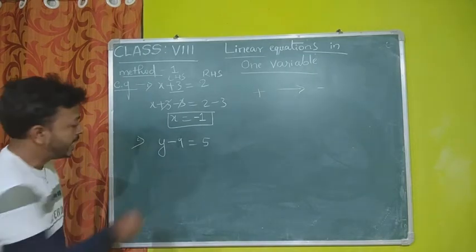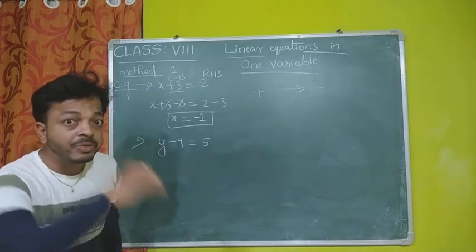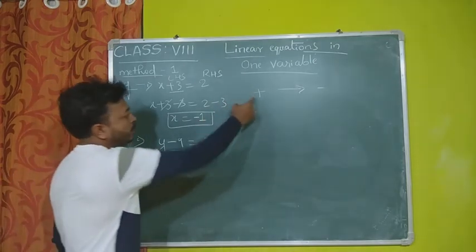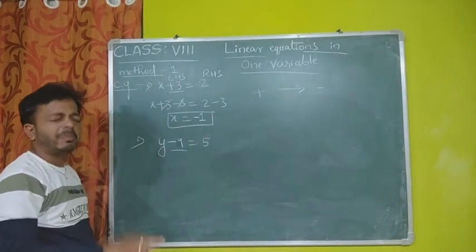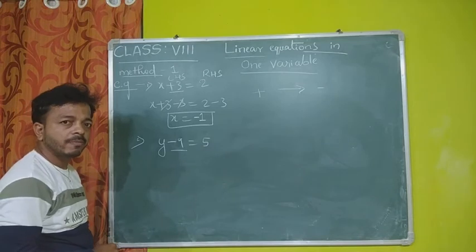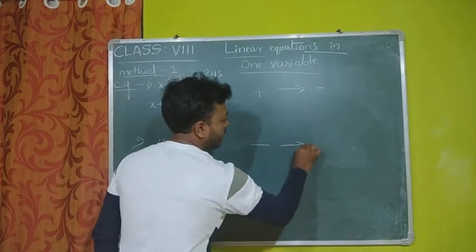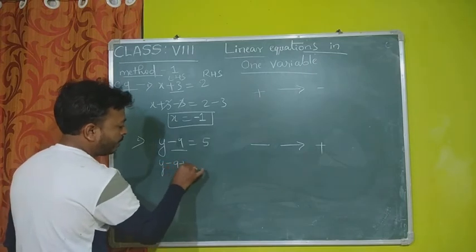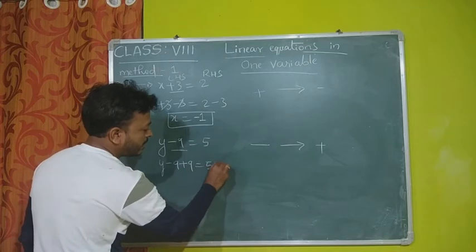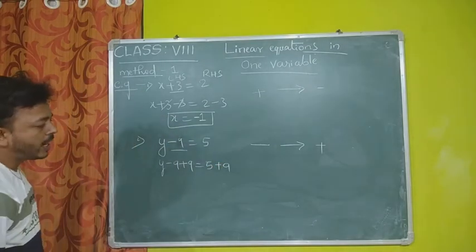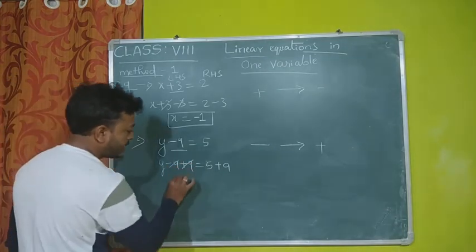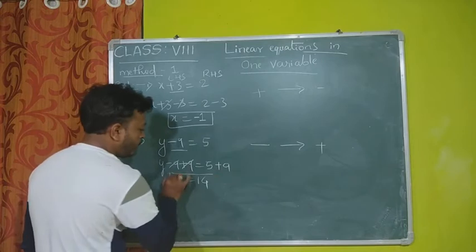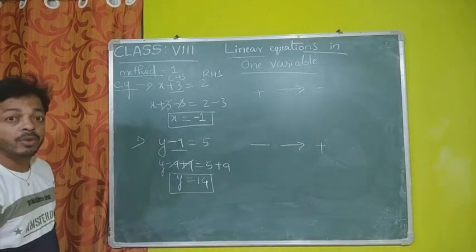Here on the LHS, y minus 9 is there. But what we want is only y on the LHS. We don't want this minus 9. If a plus number is there we took minus of the same digit. If a minus number is there, then we take plus of the same digit. So add 9 on both sides: y minus 9 plus 9 equal to 5 plus 9. Minus 9 plus 9 gets cancelled. So y equal to 5 plus 9, which is 14. The solution of y is 14, and 14 is the root of y.